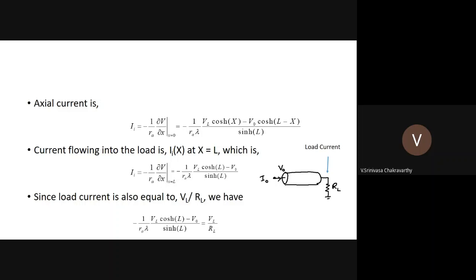Differentiating and plugging in x = 0 gives the input current. The current flowing at the load at x = L similarly yields an expression. Since the load current equals V_L / R_L, setting the cable current expression at X = L equal to V_L / R_L relates V_L and V_0. Before this, both were independent unknowns; now we can relate them by equating the actual cable current to the loading current V_L / R_L.